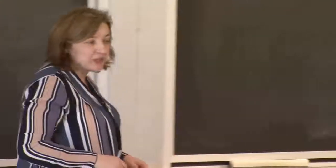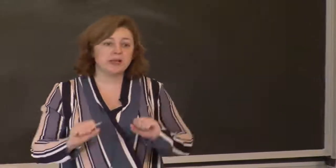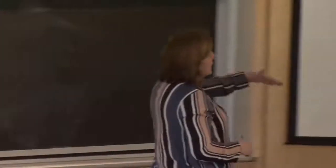Dislocations can be formed in different ways. Dislocations in metals are introduced by plastic deformation of the material. In semiconductors, they are a consequence of growth. For example, gallium nitride grown on sapphire — looking at TEM images, you can see different lattice planes as bright spots corresponding to different lattice planes in the crystal.